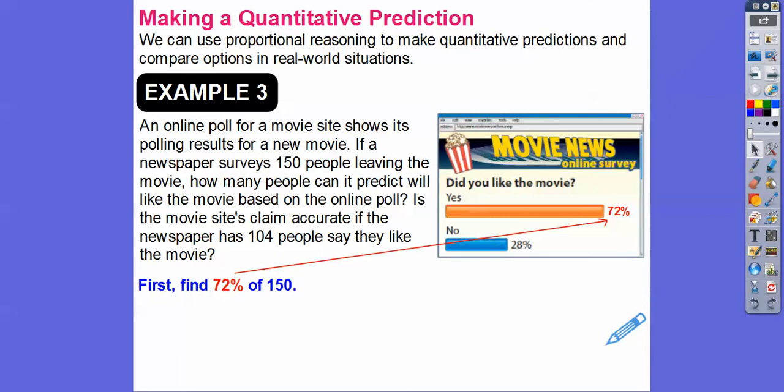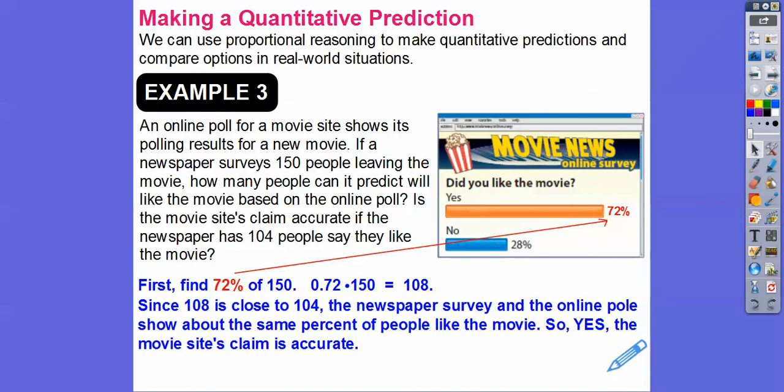So let's first find 72% of 150. So 0.72 times 150 gets us 108. So since 108 is pretty close to 104, the newspaper survey and the online poll show about the same percent of people that like the movie. So answer the question. Yes, the movie site claim is an accurate claim.